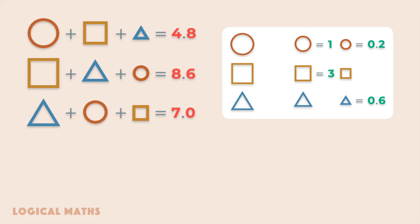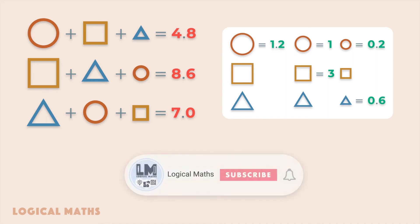Knowing the values of the small and medium circles, we get that the large circle represents the number 1.2.